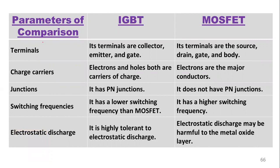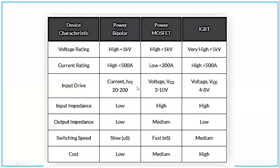Looking at the parameters: IGBT terminals are collector, emitter, and gate; MOSFET has source, drain, gate, and body. In IGBT both electrons and holes are charge carriers, whereas in MOSFET electrons are the major conductors. IGBT has a PN junction while MOSFET does not. IGBT has a lower switching frequency while MOSFET has a very high switching frequency. IGBT is highly tolerant to electrostatic discharge, which can be harmful to the metal oxide SiO2 layer in MOSFET.